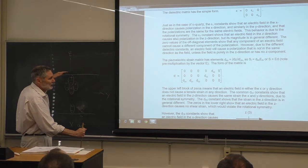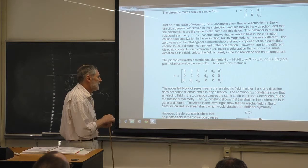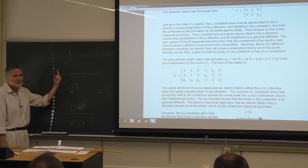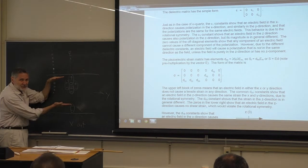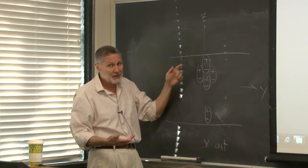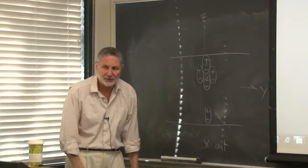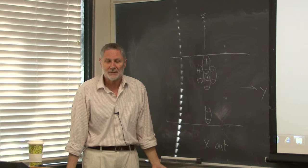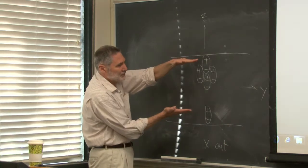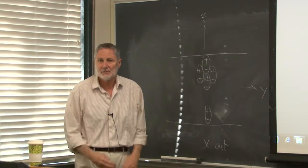The zeros in the lower-right block mean that if we had an electric field in the z direction — the direction of polarization — we would have no shear strain. If I apply an electric field along z, can it shear? Some piezoelectric materials can, but this one can't because if it sheared one way it would just as likely shear the other way by rotational symmetry — so it can't shear. That may sound strange, but it's a perfectly legitimate argument from symmetry.